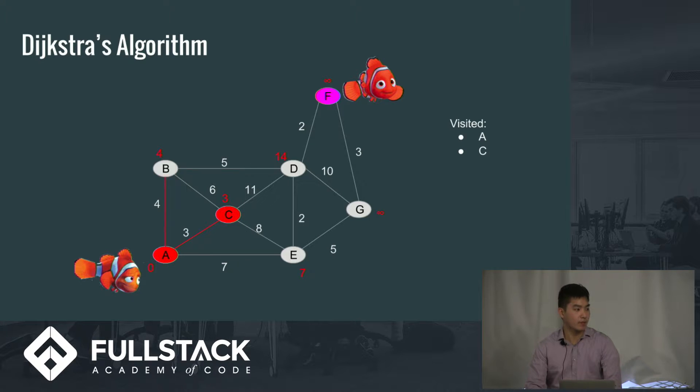And so we just keep repeating this process, going to the smallest distance unvisited node or vertex, and you just keep repeating it until you finally reach your destination. And once you push that onto the array, you're done. You found out what the shortest is between A and F, which is 11. And you can also keep track of how you get there. So in this case, to get there, you go from A to B to D to F.